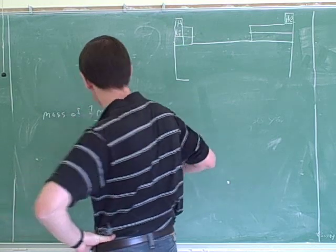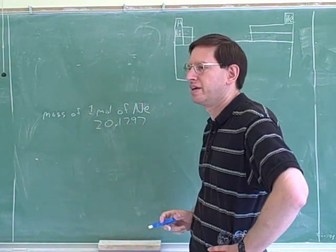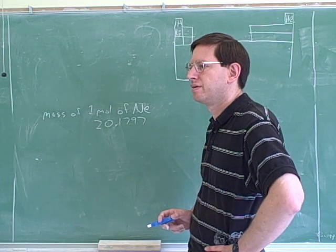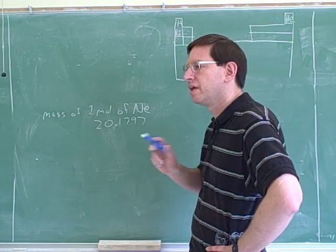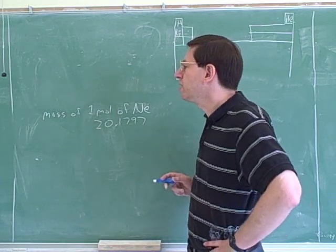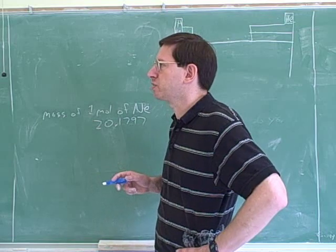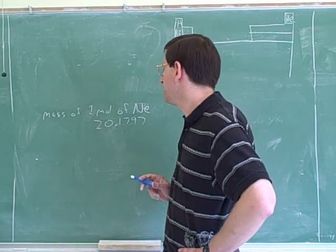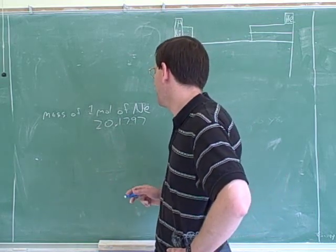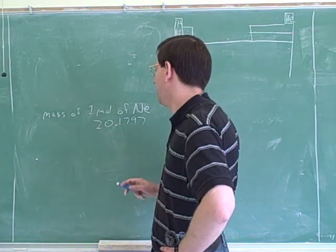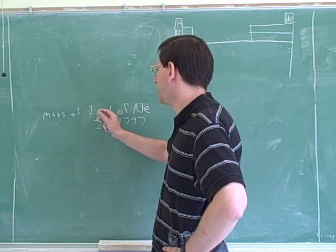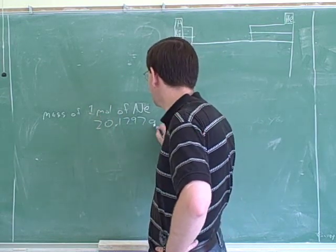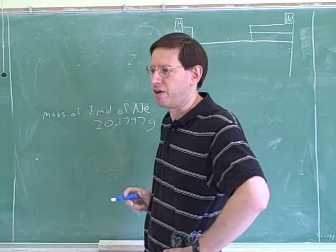Like this? Yes. What are the units on that? It's grams — it's the mass. That's right. They don't say that in the periodic table because we're supposed to know that. The periodic table tells you the mass. If you're working with moles, it tells you the mass in grams.